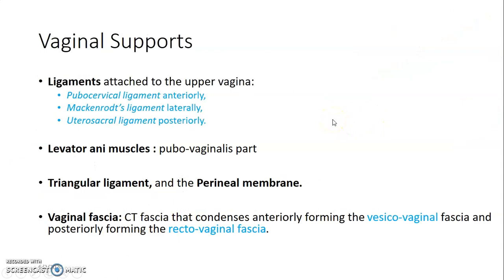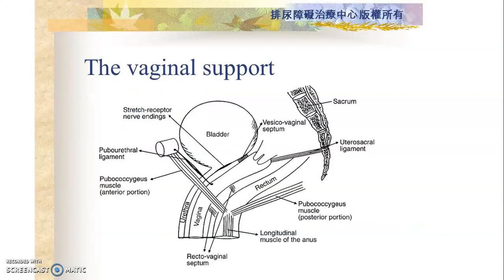The vagina is supported by ligaments that attach to the upper vagina. We have pubocervical ligaments anteriorly to the pubic bone, the Mackenrodt's ligaments laterally, and the utero-sacral ligaments posteriorly. The vagina is also supported by the levator ani muscles with the pubovaginalis part, the triangular ligament, perineal membranes, and vaginal fascia that contains connective tissue.